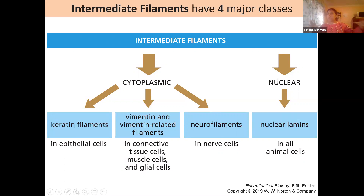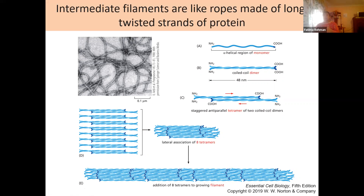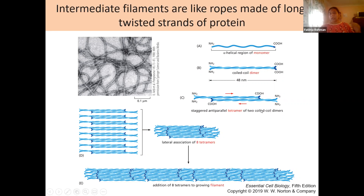Intermediate filament monomers have a central rod domain with very little secondary structure. However, they can combine with each other to create coiled-coil dimers — two monomers coming together to form a coiled-coil dimer. These dimers can then get together with other dimers to create tetramers, octamers, or even larger structures. The tetramer forms in an anti-parallel, staggered arrangement so the monomers are not completely overlapping, creating an interlocking state.